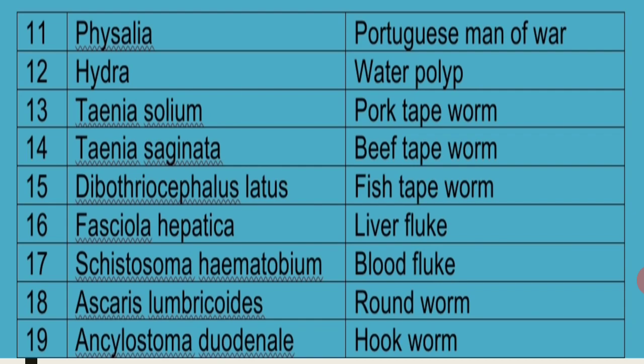Taenia Saginata is called Beef Tapeworm because it spreads through eating beef. Dibothriocephalus Latus is called Fish Tapeworm because it is present in fish. Fasciola Hepatica is present in the bile duct of sheep, hence it is called Liver Fluke. Schistosoma Haematobium is called Blood Fluke.